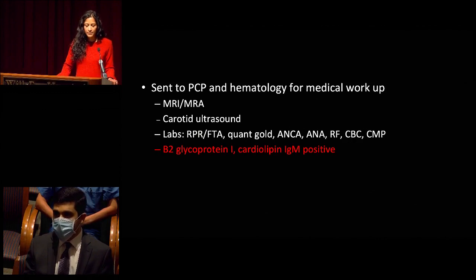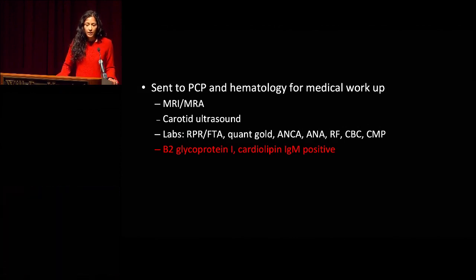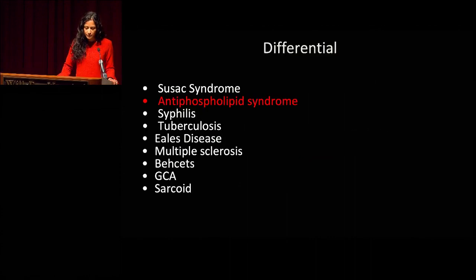Labs obtained included syphilis, QuantiFERON Gold, ANCA, ANA, RF, CBC, and CMP — all within normal limits. Lab workup was significantly positive for beta-2 glycoprotein-1 and cardiolipin IgM. The diagnosis of antiphospholipid syndrome was made.